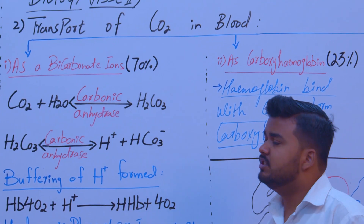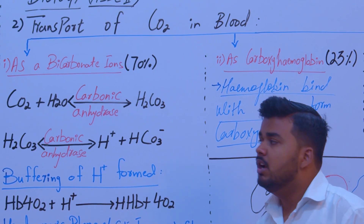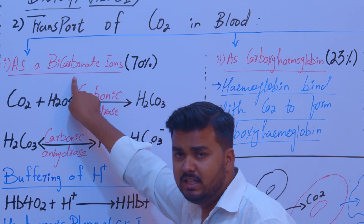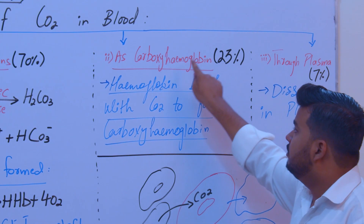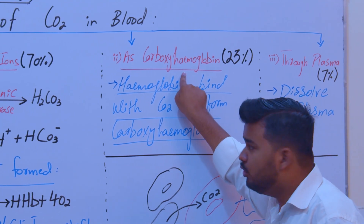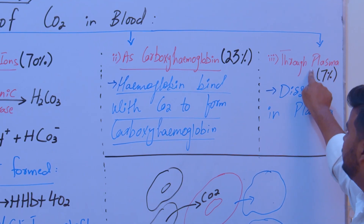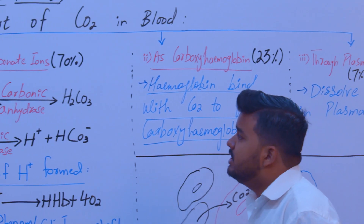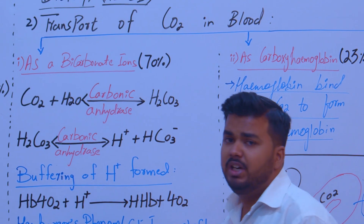Now the next topic is the transport of carbon dioxide. Carbon dioxide is transported in three ways: 70% is transported in the form of bicarbonate ions, 23% travels as carboxyhemoglobin, and only 7% is transferred dissolved in plasma. First, we learn about transport in the form of bicarbonate ions.